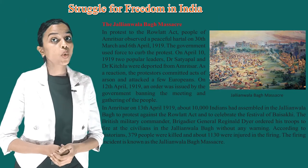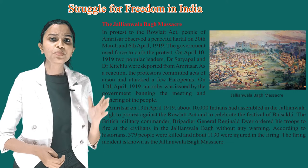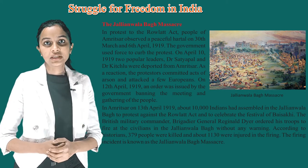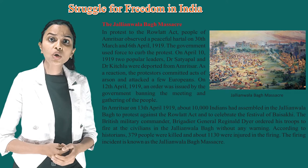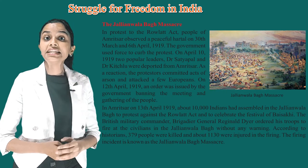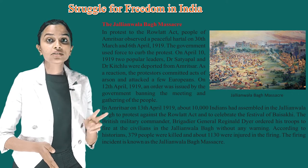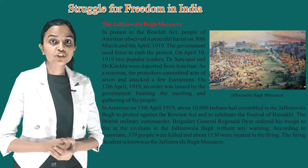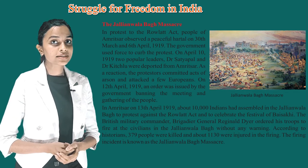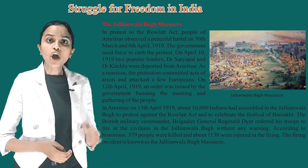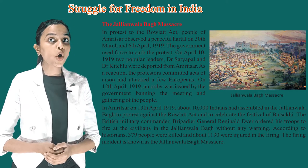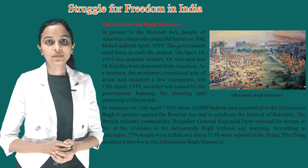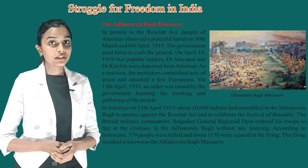Jallianwala Bagh Massacre: in protest to the Rowlatt Act, people of Amritsar observed a peaceful hartal on 30th March and 6th April 1919. The government used force to curb the protest. On 10th April 1919, two popular leaders, Dr. Satyapal and Dr. Kitchlew, were deported from Amritsar. As a reaction, protesters committed acts of arson and attacked a few Europeans. On 12th April 1919, an order was issued by the government banning meetings and gatherings of the people in Amritsar.